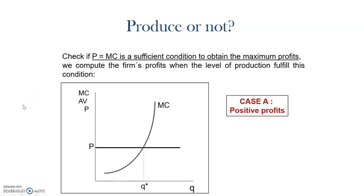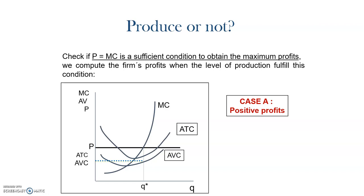The first case is when we have positive profits, as we have just explained. If we have positive profits when the price equals to the marginal cost at this point Q star, then the firm will keep producing, as it will be covering all the costs and getting some extra money.